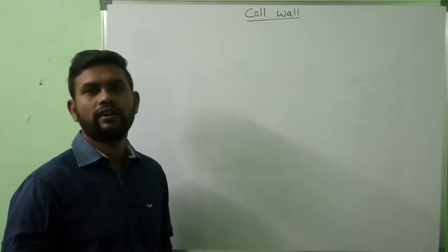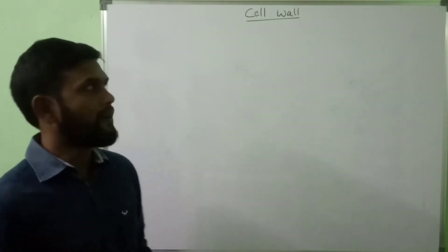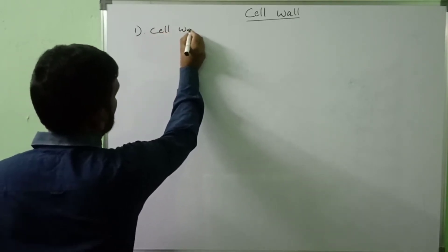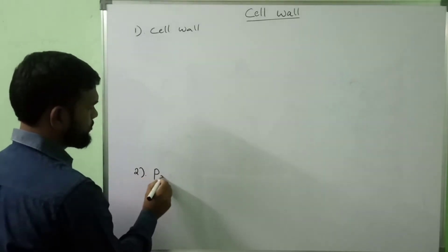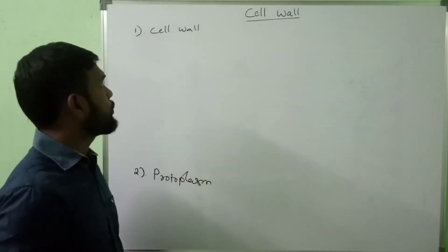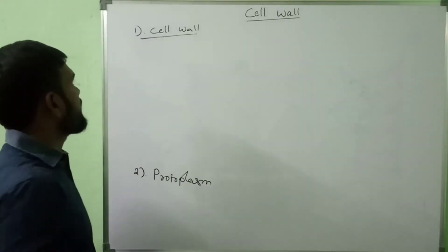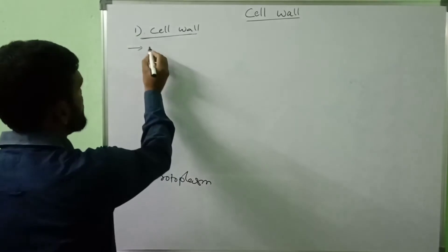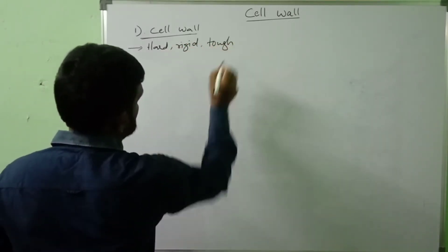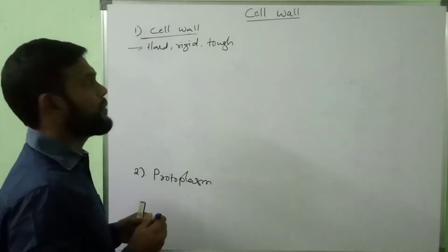Hello everyone. In the previous session we were talking about the structure of plant cell. Today I will discuss about cell wall. In the plant cell, mainly two parts are present: number one, cell wall, and second one is protoplasm. Today I am going to explain the structure of cell wall. Cell wall is a hard, rigid and tough structure. It is the outermost covering of cells.